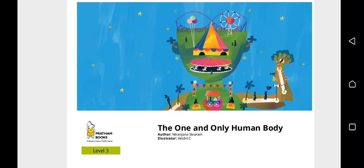The title of our story today is 'The One and Only Human Body,' and it was written by Niranjana Sivaram and illustrated by Andriy Z. As you can see in this first page, it looks like a fair, an amusement park that looks like the human body. Let's see what the story is about.